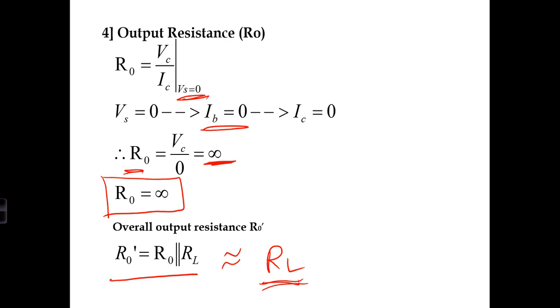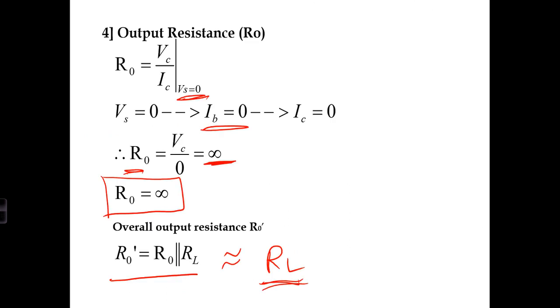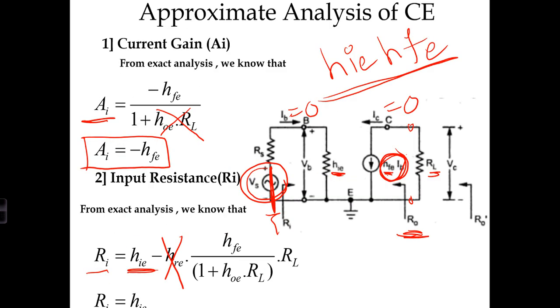That is all related to approximate analysis of CE amplifier. We have calculated four terms: current gain, input resistance, voltage gain, and output resistance. Similarly, we can perform approximate analysis for common base and common collector. In the next videos, we will see approximate analysis of common base and common collector. Thank you.